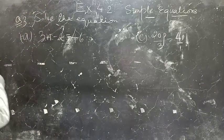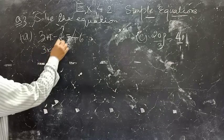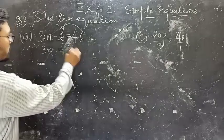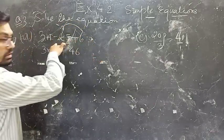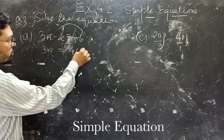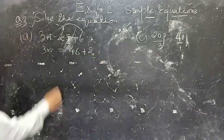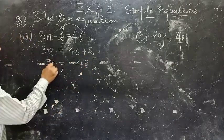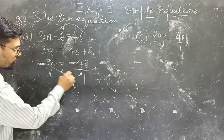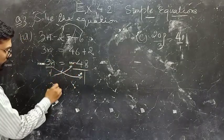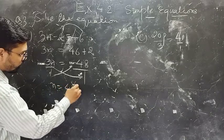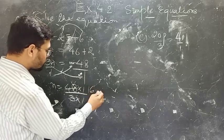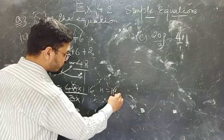The equation is 3N minus 2 equals 46. First take this 2 to the RHS. The sign will change — here it is minus 2, so it becomes plus 2. So 3N equals 48. Now cross multiply by 3. You will have 48 into 1 divided by 3 into 1, so N equals 16.